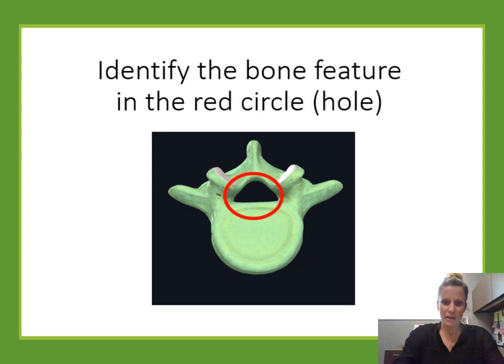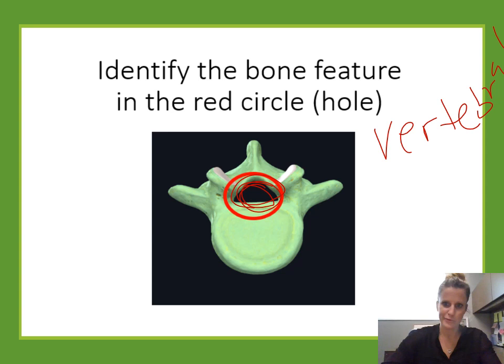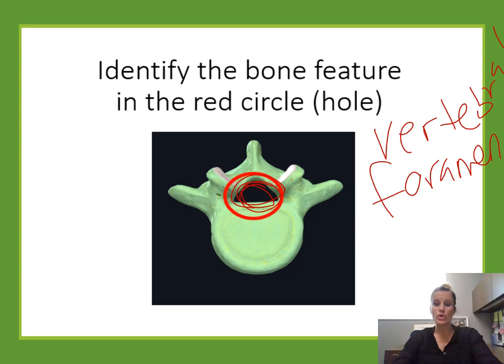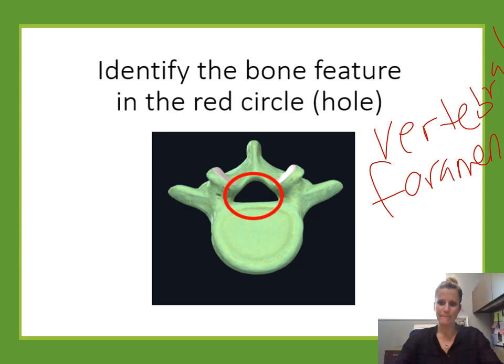Identify the bone feature. This is the large hole in the center of a vertebra — specifically a lumbar vertebra. There are no little holes on the sides, so this isn't cervical. It has a really big beefy body and a short spinous process, not long and thin like thoracic. That large central hole is the vertebral foramen.